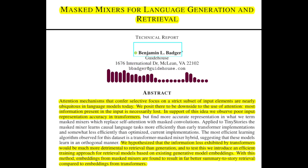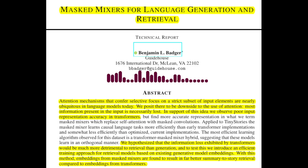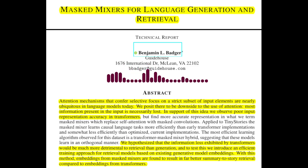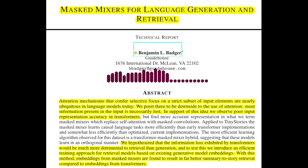The authors create a synthetic dataset of story summaries and their corresponding stories. They train a retrieval model using embeddings generated from both transformers and masked mixers, training it to match story summaries to their corresponding stories. The results show that embeddings from masked mixers lead to significantly better retrieval performance, achieving much lower cross-entropy loss and higher top-1 accuracy on the evaluation dataset.